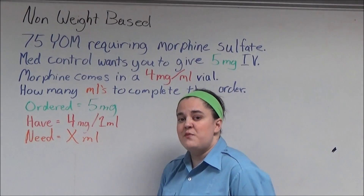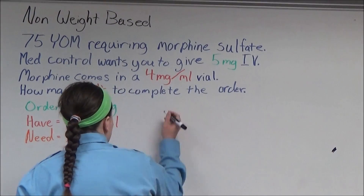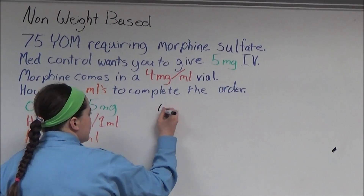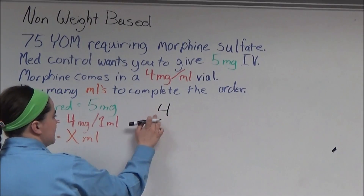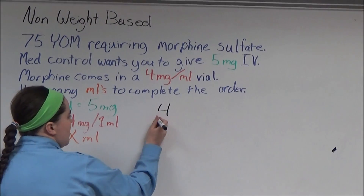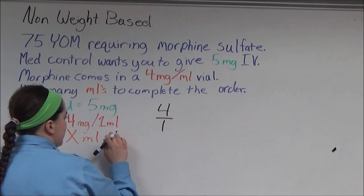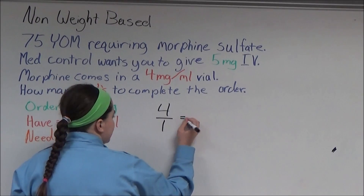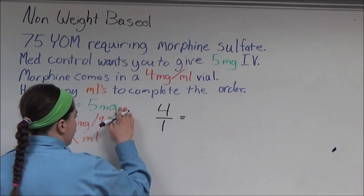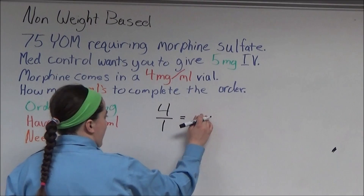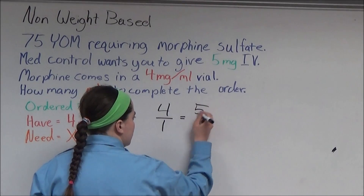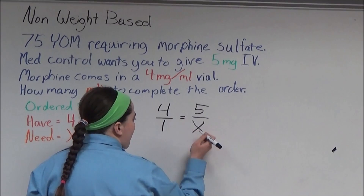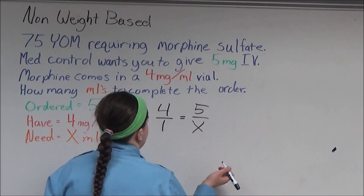Now to set up the equation. Milligrams always goes on top of milliliters, so 4 milligrams goes over 1 milliliter, then an equal sign, and 5 milligrams goes over top of x, our unknown number of milliliters.